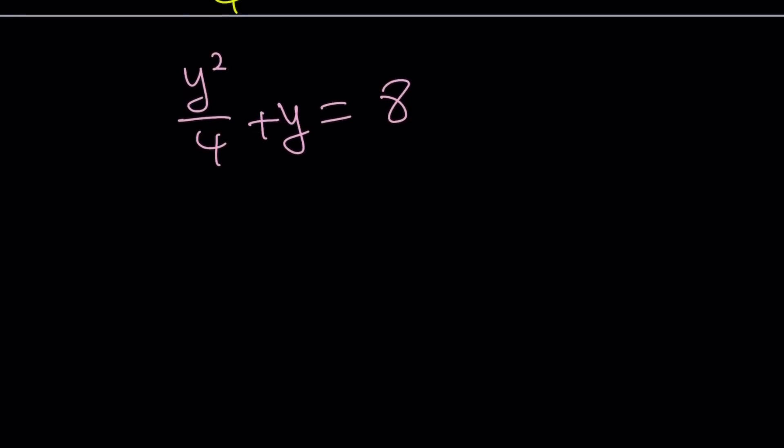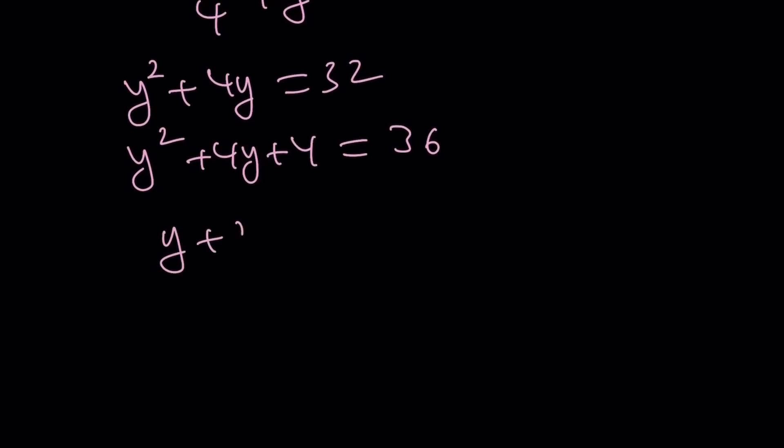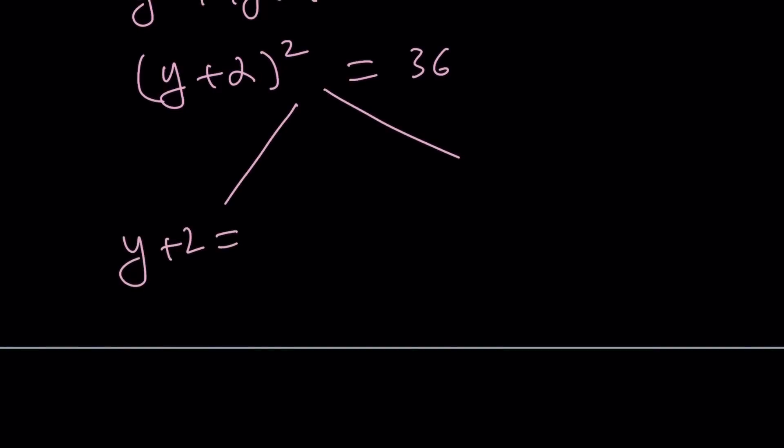And this is quadratic in y. Let's multiply both sides by 4. And then add 4 to both sides. Because we are completing the square. And the left-hand side becomes y plus 2 squared. 36 is 6 squared. So we can kind of split it up into two solutions. y plus 2 is either 6 or negative 6.